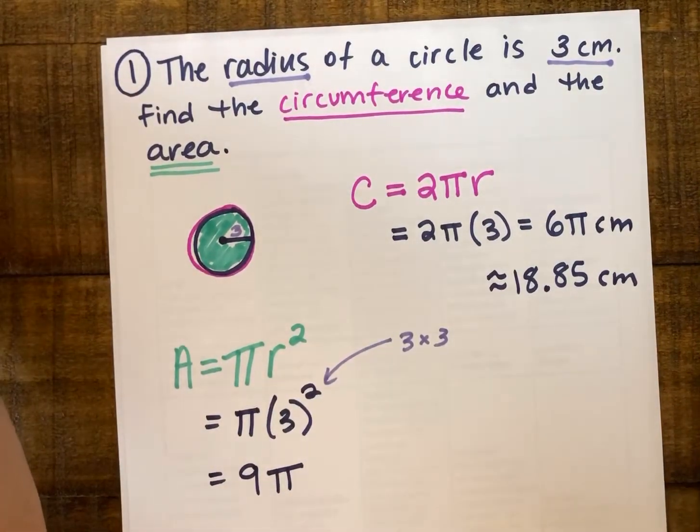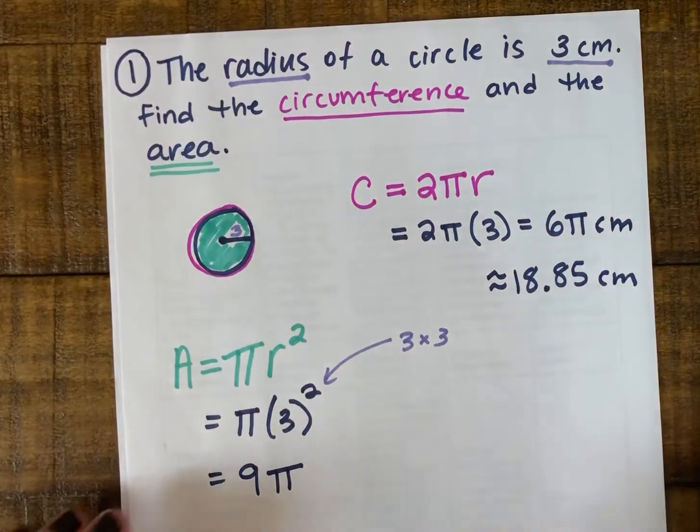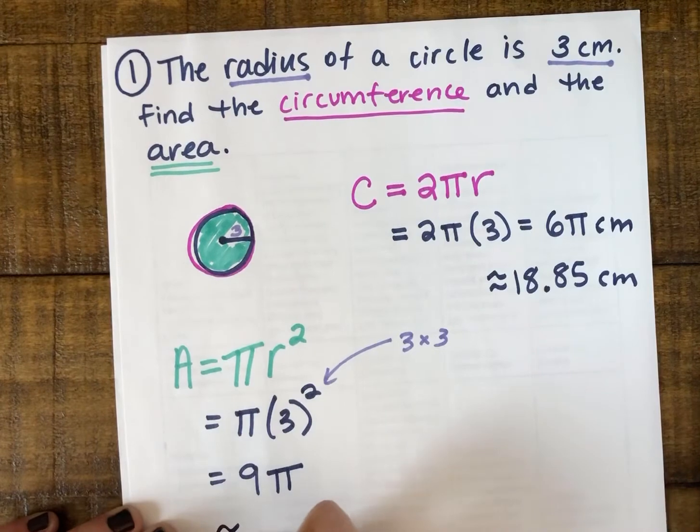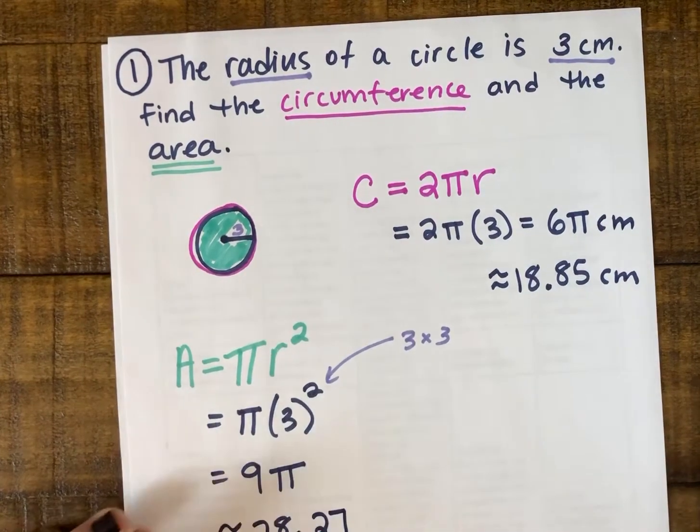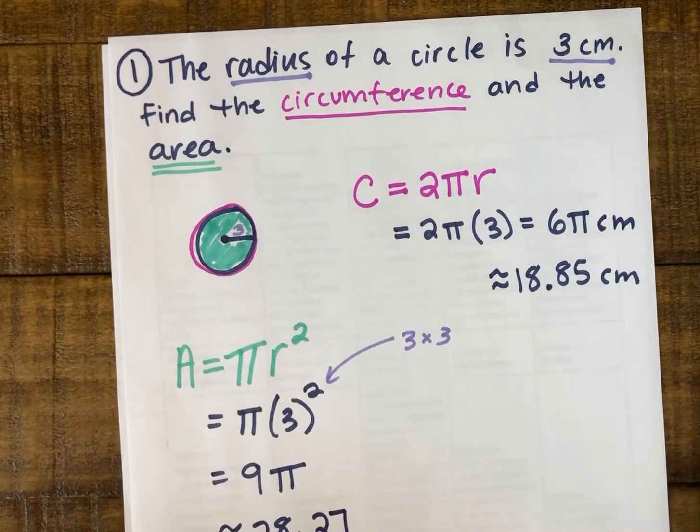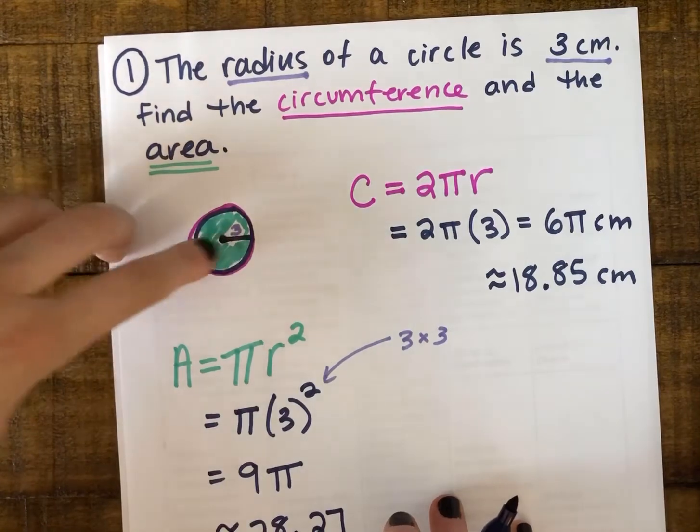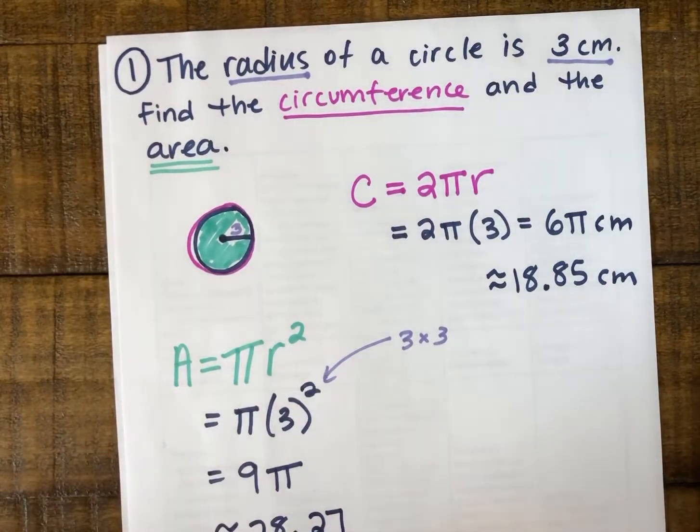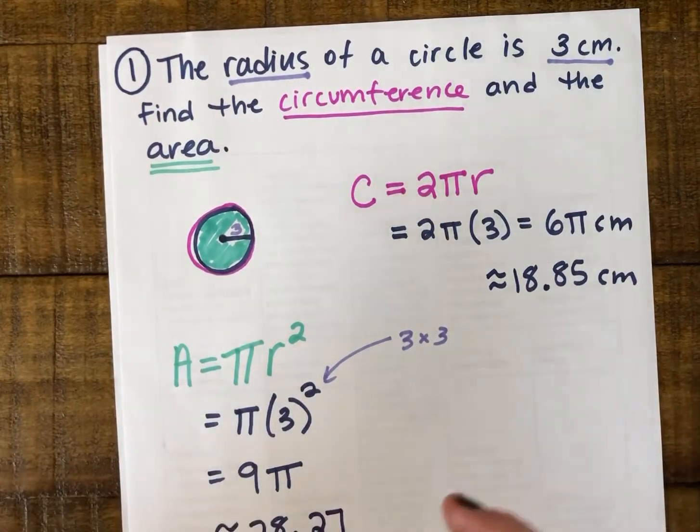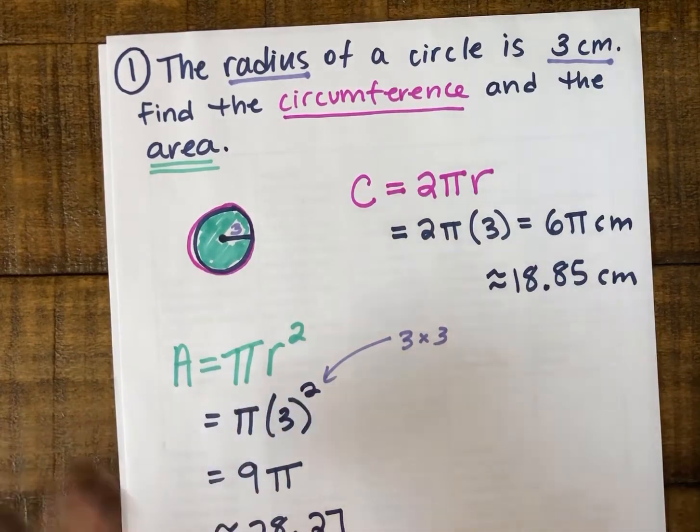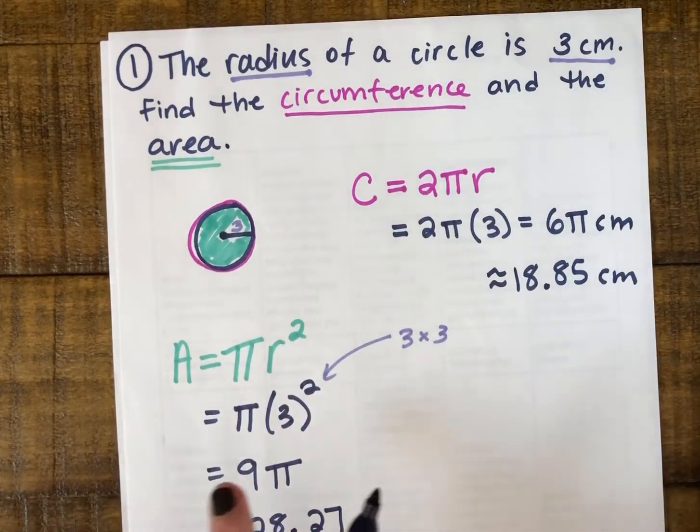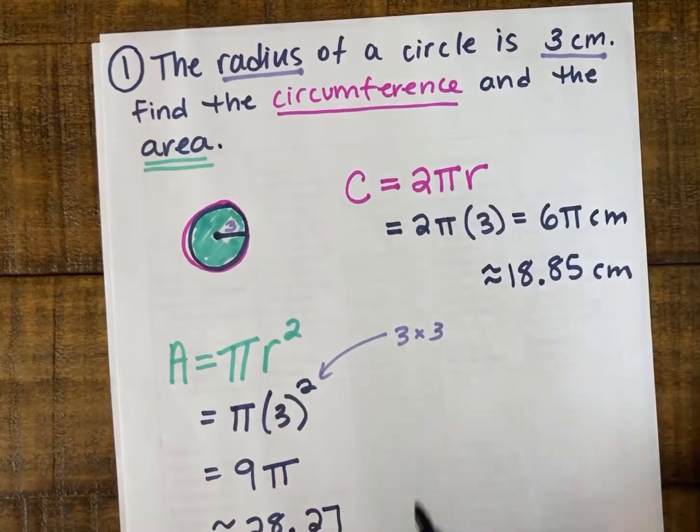If I type 9 times π into my calculator, I get a rounded answer of approximately 28.27. When I'm measuring the area of something, I'm measuring how much space it takes up. So we need to measure that in square units like we did with our radius squared before. We're counting how many square centimeters we have.